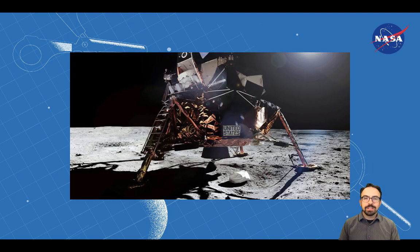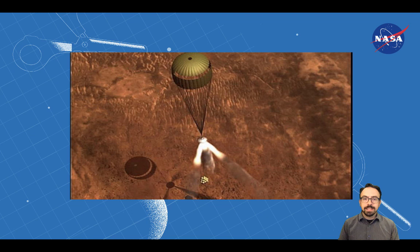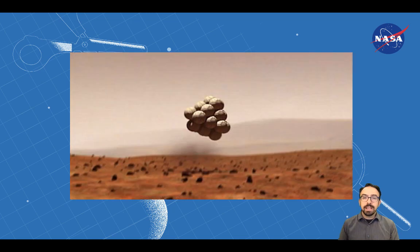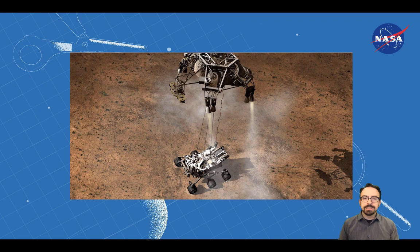Landing spacecraft anywhere in the solar system is hard. Whether it's astronauts landing on the moon, returning to Earth, or robots touching down on Mars, we have to design systems that can protect astronauts and robots as they go from tens of thousands of miles per hour to zero. We use parachutes and rockets to slow us down, airbags to cushion our landing, and even rocket-powered skycranes to safely deliver rovers to the surface of Mars.